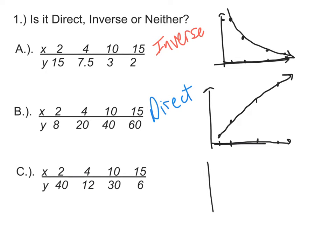Looking at the graph, we can visually see it, because 2 is up here at 40, 4 is down to 12, at 10, back up to 30, and at 15, down to 6. And we see that this thing is going up and going down, and that's why it's neither direct nor inverse.